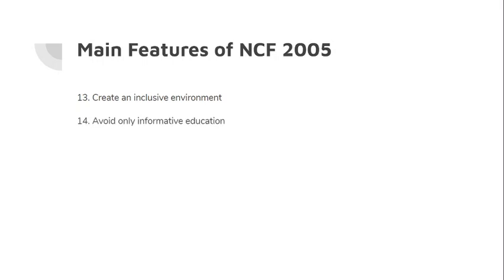Avoid only informative education — avoid education that only gives information. Create education that helps children experience things, gives them opportunities. Such a curriculum should be built. Next: avoid punishment in the classroom — beating, corporal punishment, all of these should be avoided. Such punishment should not happen in class, as it causes children to be afraid and drop-out rates go up. Find different ways to emphasize and enhance children's learning instead.